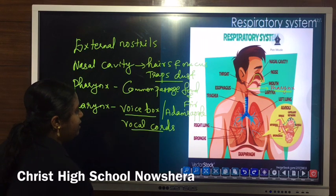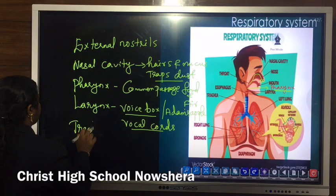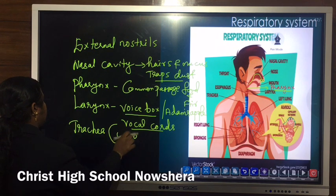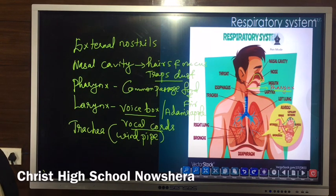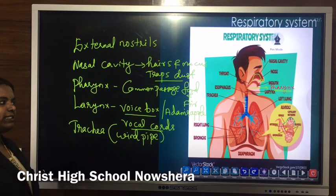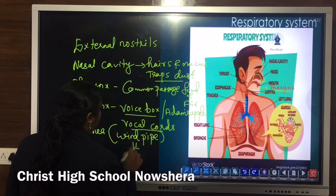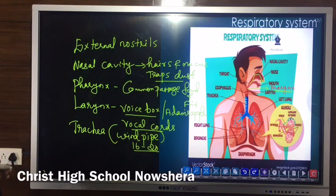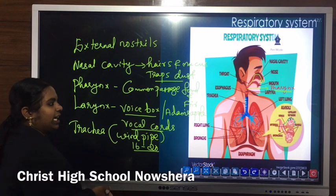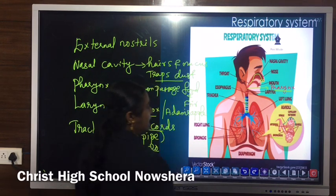The larynx leads to the most important structure known as the windpipe or trachea. Just as the esophagus is the food pipe for passage of food, the windpipe or trachea is present for the passage of air. Trachea is a tubular structure composed of 16 to 20 cartilaginous rings.